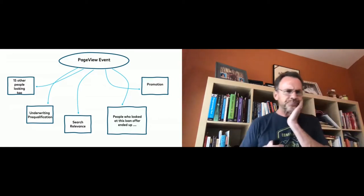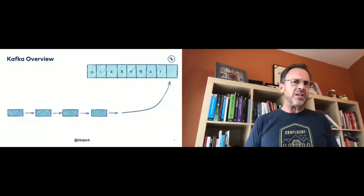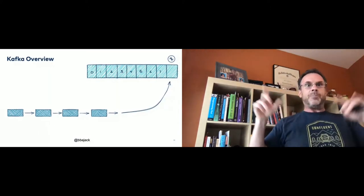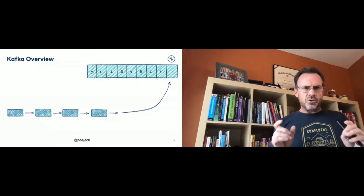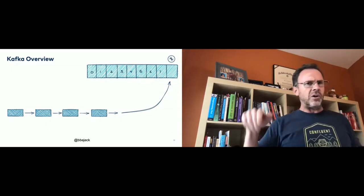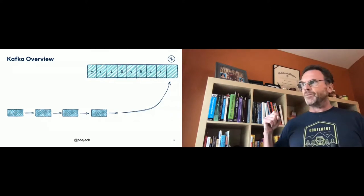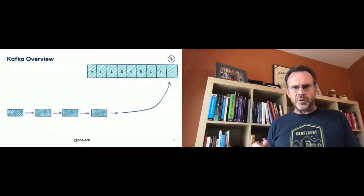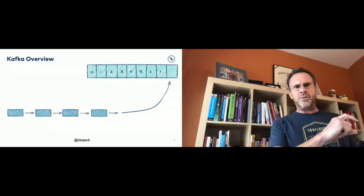Kafka is essentially based on the idea of a log — not application logs developers are used to, but the record of transactions. It's the core data structure holding all the series of events that have happened. Each record that comes in gets appended to the end of the log. It's a very simple data structure — a new record comes in and gets appended, assigned an offset number indicating its position in the log. You automatically get time ordering of events, and this represents the source of truth of data for how things have occurred up to a certain point in time.